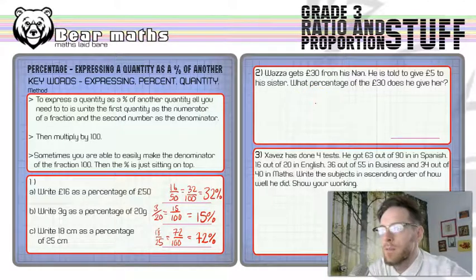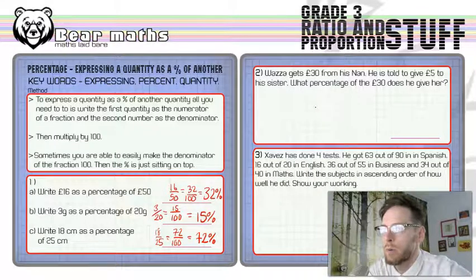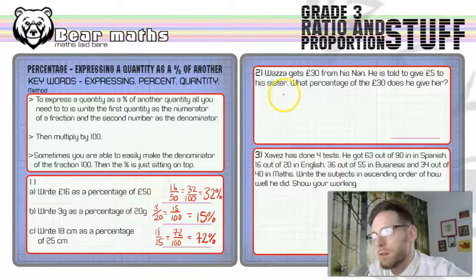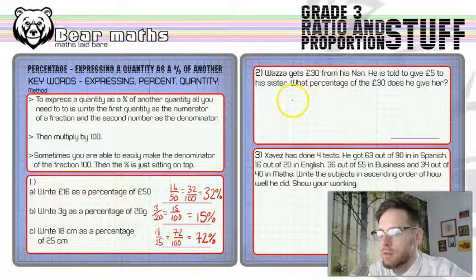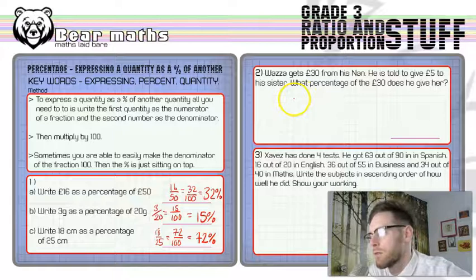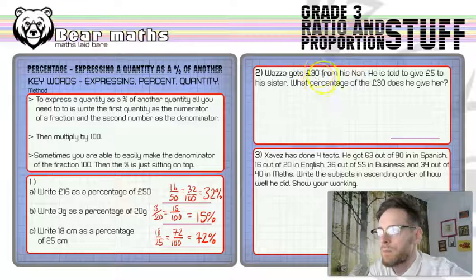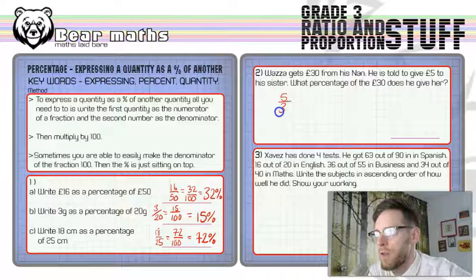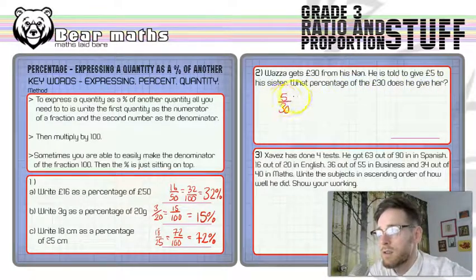Number two, Wazza gets 30 pounds from his nan. He's told to give 5 pounds to his sister. Poor old Wazza doesn't get to keep it all. What percentage of the 30 pounds does he give to his sister? So it's the same thing. He gets 30 pounds, he's told to give 5 pounds to his sister. So we're not necessarily writing the first number in the question as the numerator. It's a contextual problem. So 5 out of 30 pounds has gone to his sister.